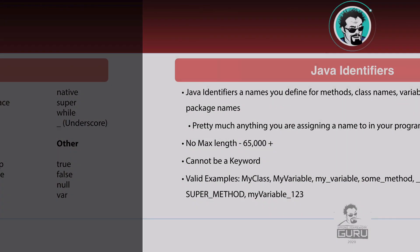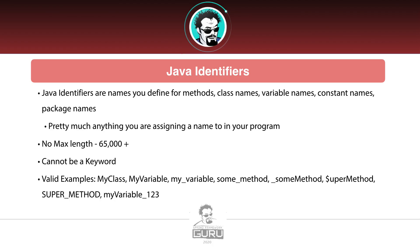Java identifiers are names that you define when you're programming. They are used for things like class names, methods, variable names, constant names, and package names — pretty much anything that you as a developer are going to assign a name to in your program.